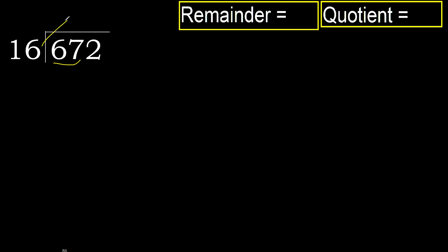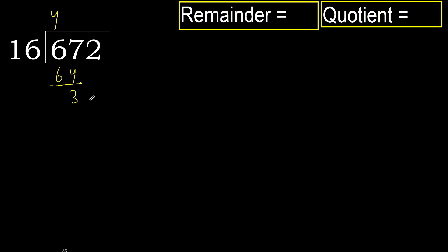16 multiplied by which number is nearest to 67 but not greater? 16 multiplied by 5 is greater. 16 multiplied by 4 is 64, which is not greater. 67 minus 64 is 3. Next.